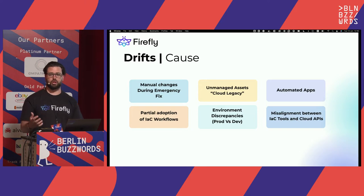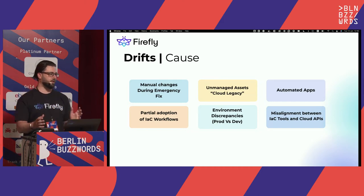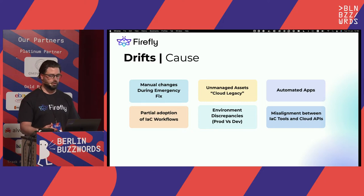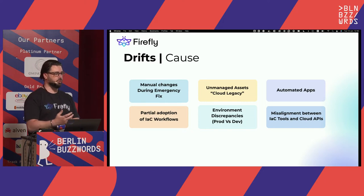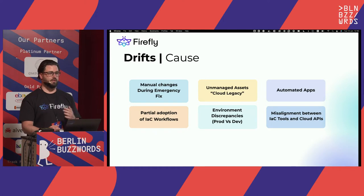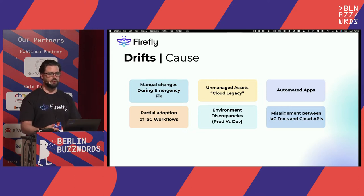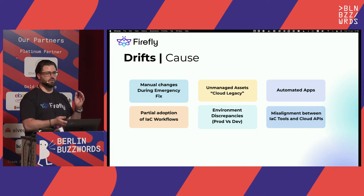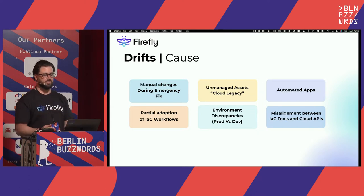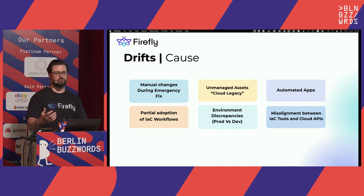Another reason is changes between environments. If you have a production environment that is highly sealed — nobody can touch it except through Terraform configuration — what about staging or development? What we see is that production is sealed, but the staging environment is more developer-friendly, developers have access to it, and they make manual changes not described in the infrastructure as code. This creates discrepancies between environments. You think there's no drift in production, but production doesn't have all the configuration needed for your workloads.